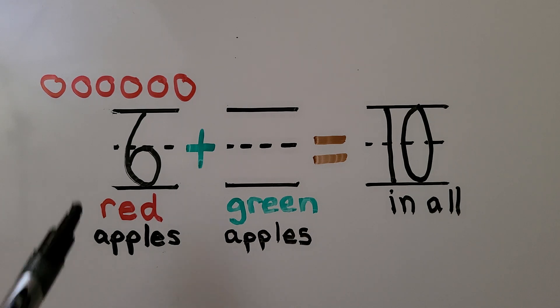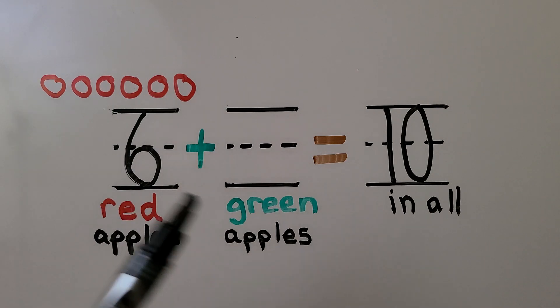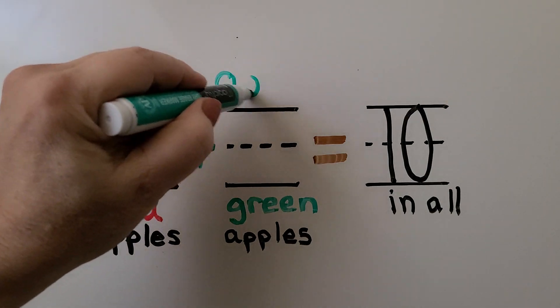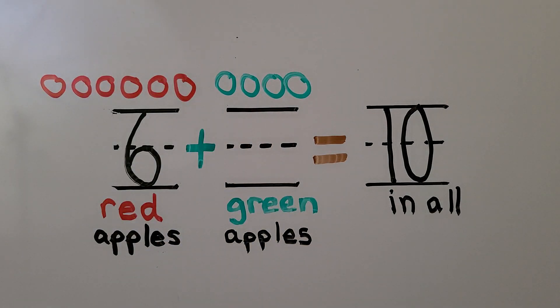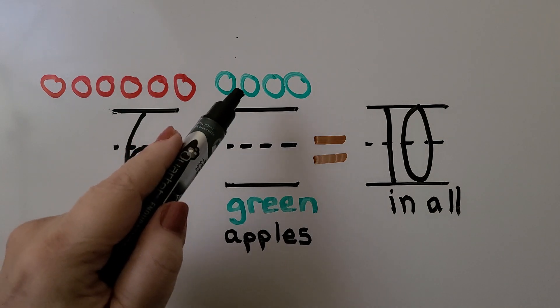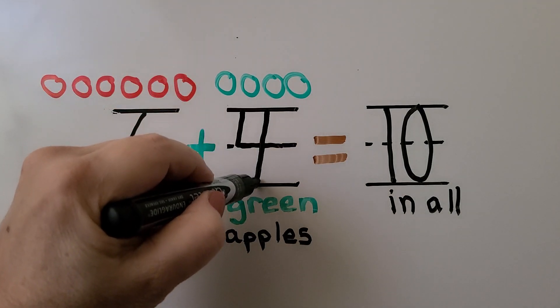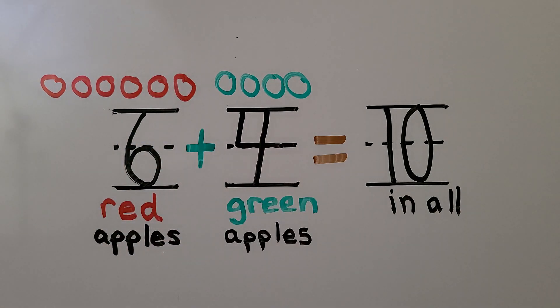If there are 6, how many more are needed to make 10? Which number when put together with 6 will make 10? We can draw circles for more apples until there are 10. We have six, seven, eight, nine, ten. How many circles did we draw for the green apples? We drew one, two, three, four. We needed 4. We needed four green ones to be added to the six red ones to make 10 in all. Six plus four is equal to 10.